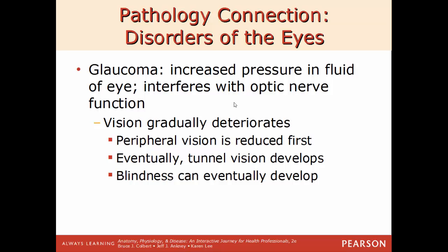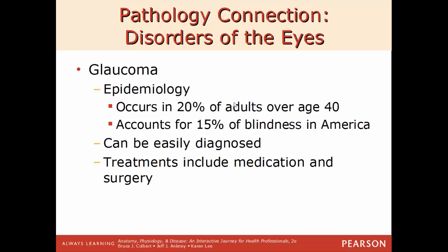Glaucoma is where you have increased pressure in the fluid of the eye. This pressure causes squeezing on the optic nerve, disrupting its function and gradually deteriorating vision — peripheral vision is affected first. Eventually you get more and more tunnel vision until, if left untreated, you become blind. Glaucoma occurs in about 20% of adults age 40 or older and accounts for roughly 15% of all blindness in America. It is very easy to diagnose, and common treatments include surgery and medication.